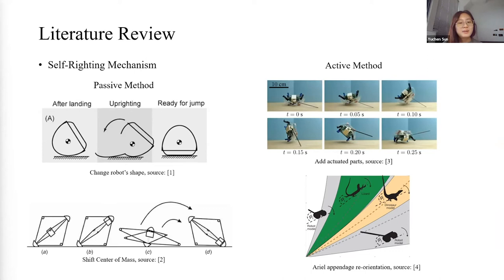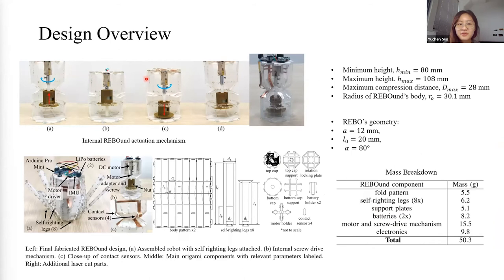So I think the video should go over now. So generally, there are two kinds of self-righting methods. The first one is the passive method by changing the robot's shape or the center of the mass. And another method is active method. It can be achieved by adding an actuator to push the robot against the ground. And another method is an aerial appendage that can reorient the robot in air. So here is the design overview of our new actuator method. This picture shows the new actuator method. Compression begins with the motor turning counterclockwise, which pulls the nut up. Once it is compressed, the motor turns clockwise and pushes the nut down until it jumps. And an IMU is added to the top of the REBOund to estimate the posture. And we also implement the complementary filter to obtain a more precise detection. And here are the parameters we use for the new REBOund.